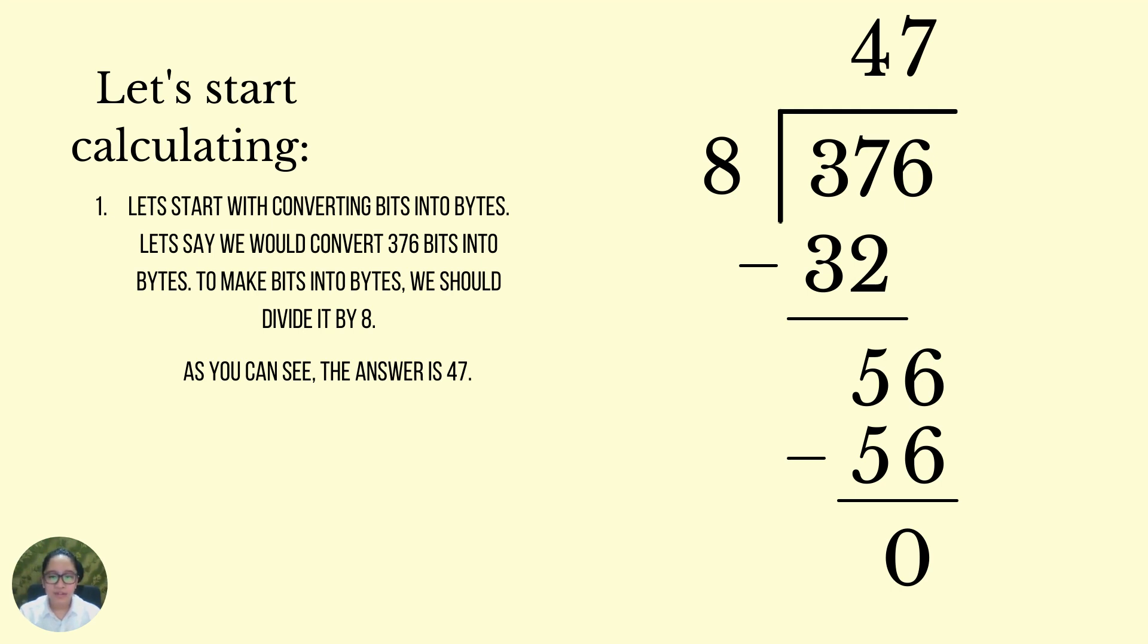8 times 4 is 32. So we subtract it and the one remaining is 5 from 7 subtracted by 2. Now we would have to bring down the 6 on the right of 7. And it's now 56. 8 times 7 is 56. So 56 minus 56 leaves no remainder.